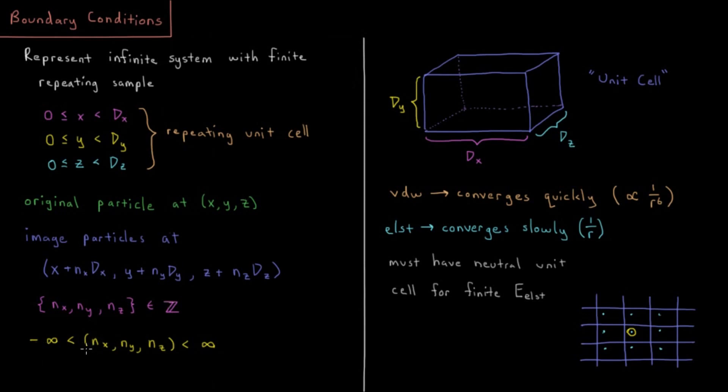So as I mentioned, all three of these nx, ny, and nz, in principle they go from negative infinity to positive infinity. So this hopes to replicate our system and try to mimic it being essentially an infinite system with this finite repeating sample.